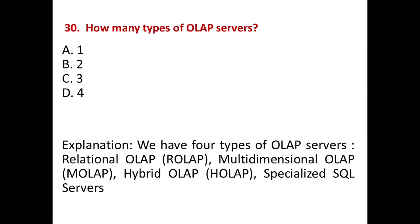Next question: How many types of OLAP servers are there? Option A: 1. B: 2. C: 3. D: 4. Answer is Option D, 4. We have 4 types of OLAP servers: Relational OLAP (ROLAP), Multidimensional OLAP (MOLAP), Hybrid OLAP (HOLAP), and Specialized SQL servers. Thank you.